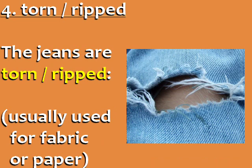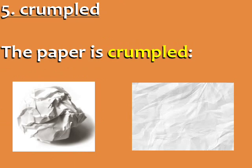Number 4: Torn, Ripped. The jeans are torn or ripped. Torn and ripped are usually used for fabric or paper. Number 5: Crumpled. The paper is crumpled. This word is typically used only with paper.